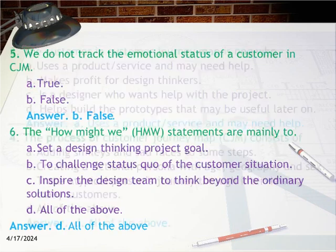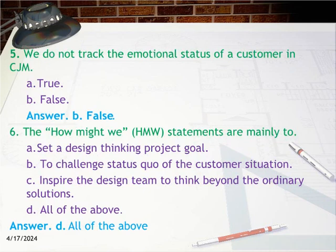Question 5: We do not track the emotional status of a customer in CJM. Option A: True. Option B: False. Answer: B — False.